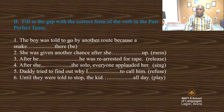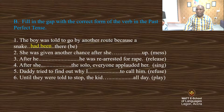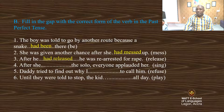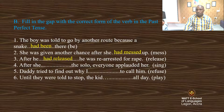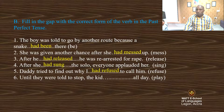Let's put the verbs in the past perfect. The boy was told to go by another route because a snake had been there. She was given another chance after she had messed up. After he had released, he was re-arrested for rape. After she had sung the solo, everyone applauded her. Daddy tried to find out why I had refused to call him. Until they were told to stop, the kids had played all day.